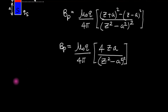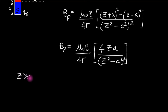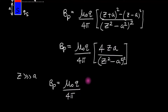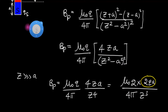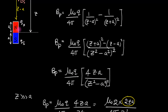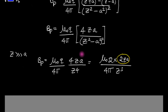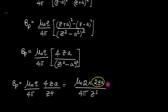Now I'm going to go far away — assume z is much much bigger than a. In that limiting case the denominator (z² minus a²)² becomes just z⁴, which cancels one factor of z, and I end up with mu-naught over 4-pi times 2qa over z³. Here 2a times q represents the dipole moment of this bar magnet — the magnetic charge multiplied by the separation distance.